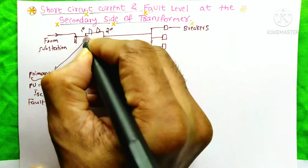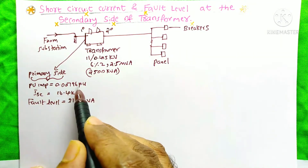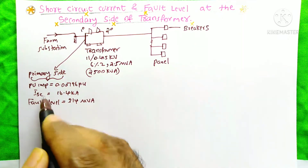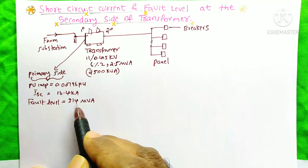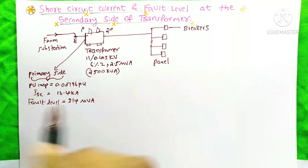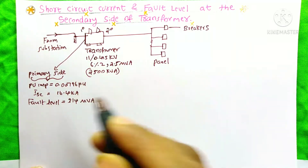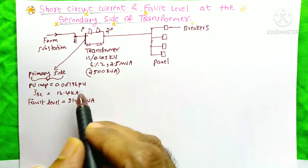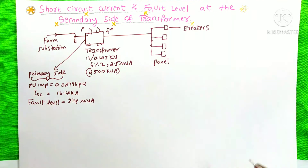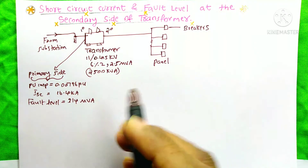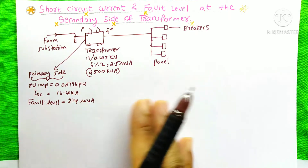This transformer's primary side data: the per unit impedance is equal to 0.00796 per unit, the short circuit current is 6.4 kA, and the fault level is equal to 314 MVA. This tutorial is actually the continuation of the previous video. If you did not see that video yet, I will give the link on the i-button and also in the description box. You need to see that video first, then only you will understand this video.